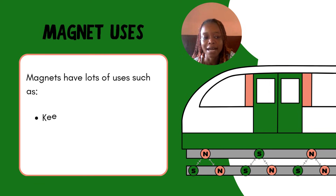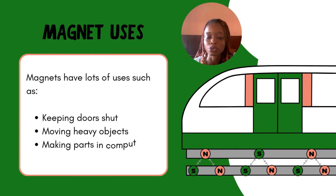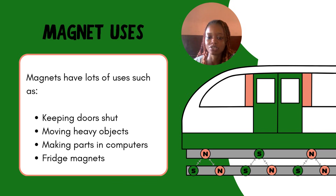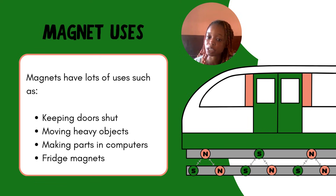Now, what are the uses of magnets? Magnets have various uses. One example is for keeping doors shut — most bolts and latches on doors are basically magnetic, so when they are shut together they attract each other, which helps to keep the door closed. We also use magnets for moving heavy objects, using their ability to attract metals to them.